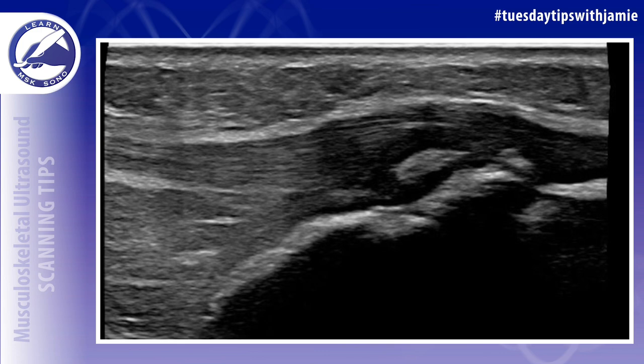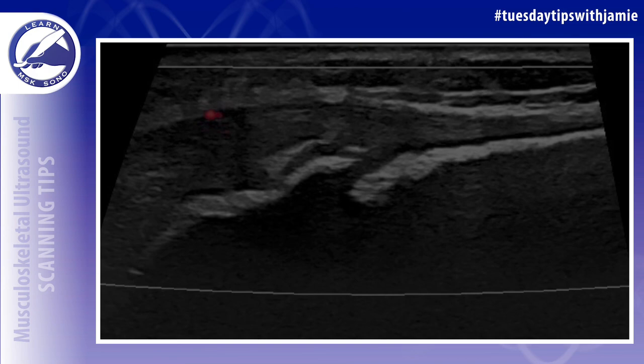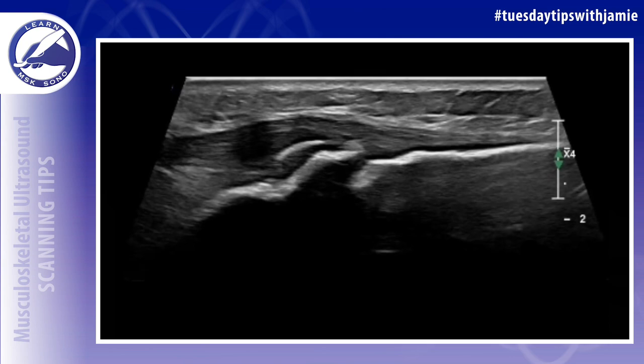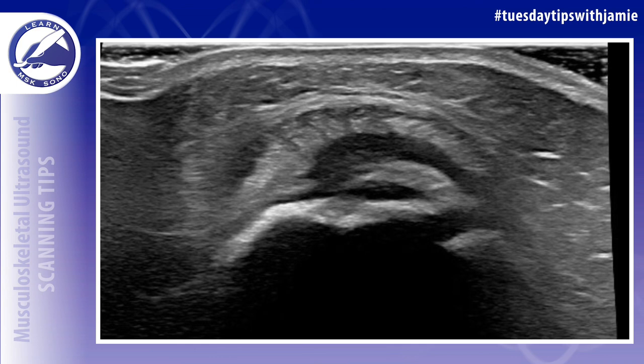Irregular transverse ossifications or fragmentation at the tibial tuberosity will be visualized. Adjacent soft tissue swelling and patellar tendon thickening may also be seen. These findings can be visualized into adulthood if this condition is left unresolved.